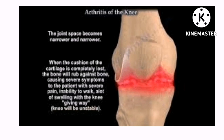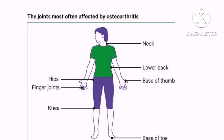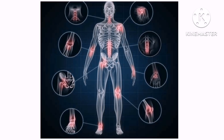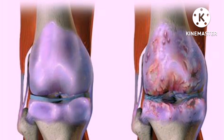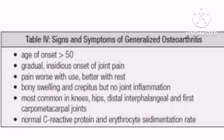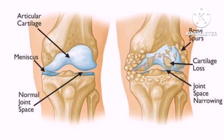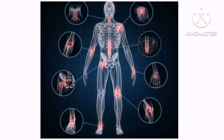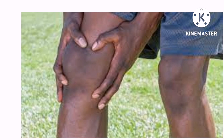Osteoarthritis is a condition that makes people live in pain, fatigue, and in isolation. It is a very common condition of the joints. We have different joints in our bodies — the neck, the lower back, the hips, base of thumb, knees, and base of toe. A joint is basically where two or more bones meet. The joints most affected are those that carry our weight, such as the hip and knee, and also the joints of the hand, which we use to eat, cut, carry, lift, and write.